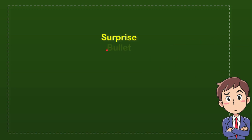The first option is Surprised. The second option is Bullet. The third option is Genius. And the last option is Flash.